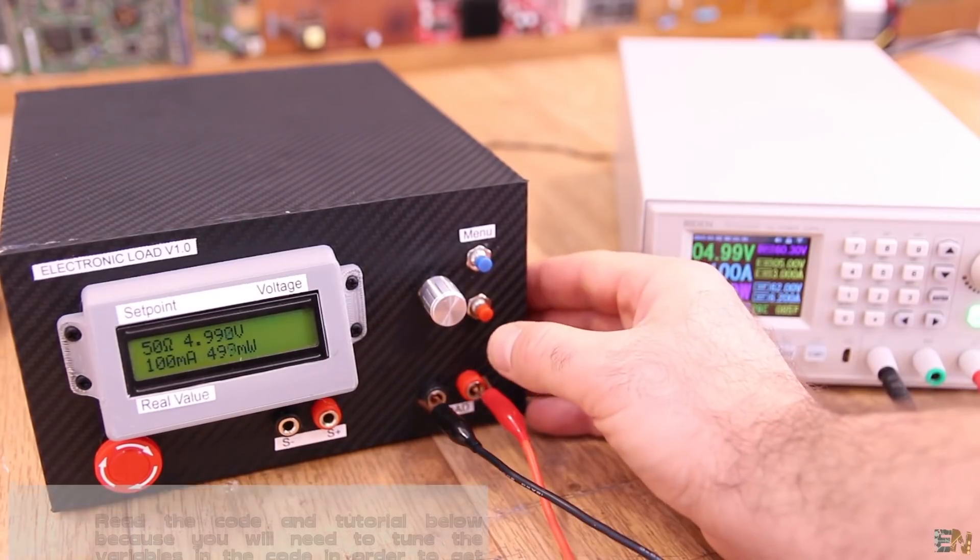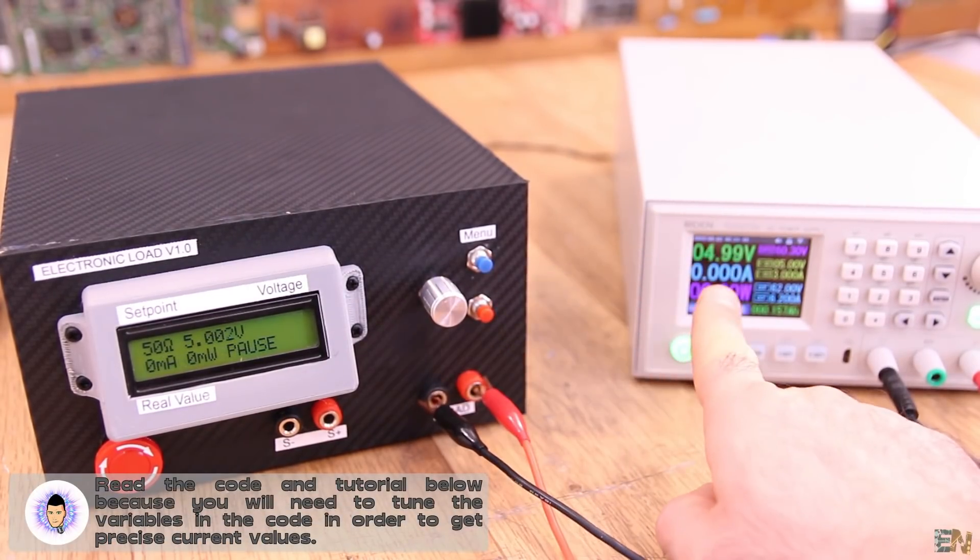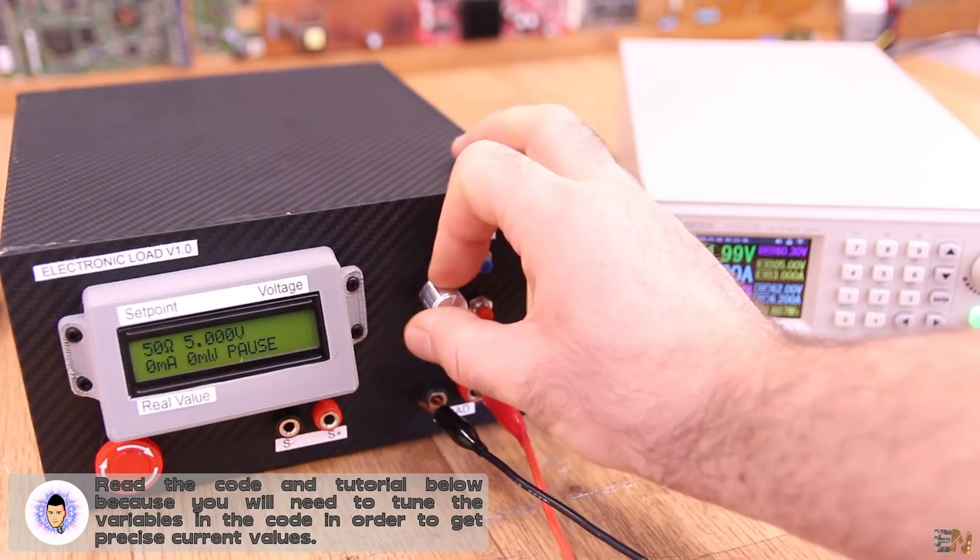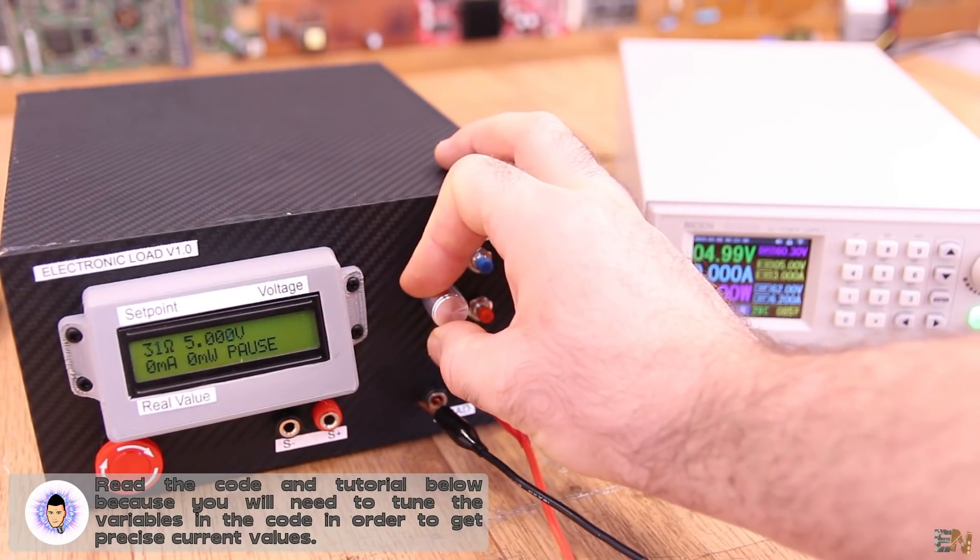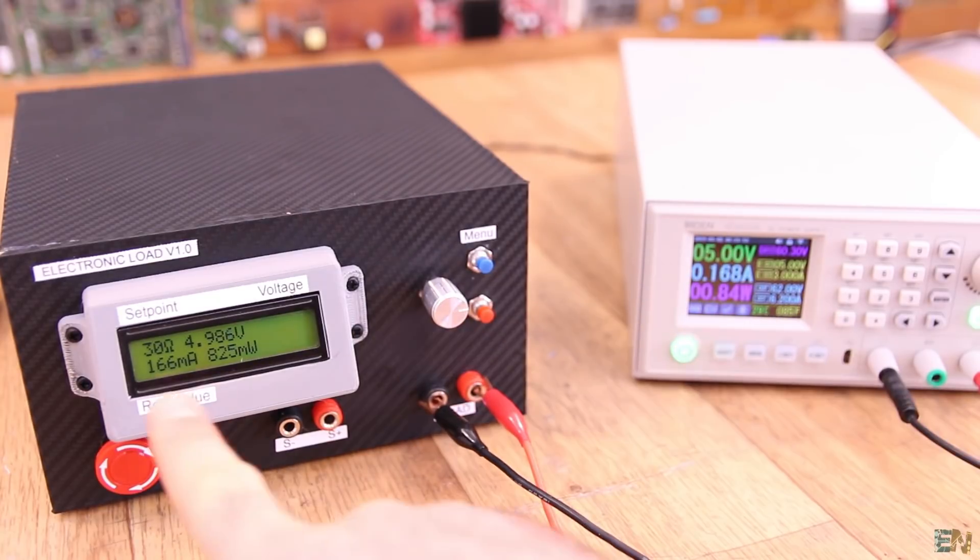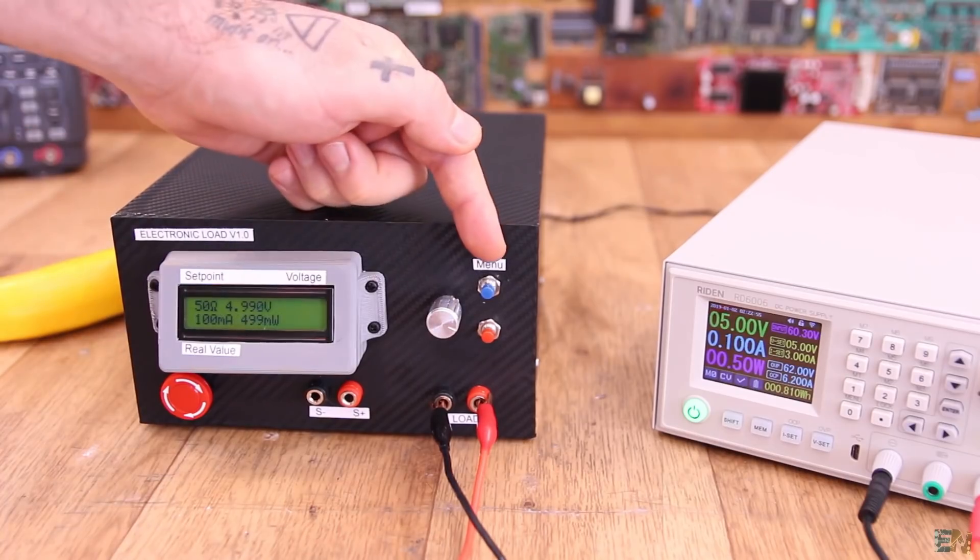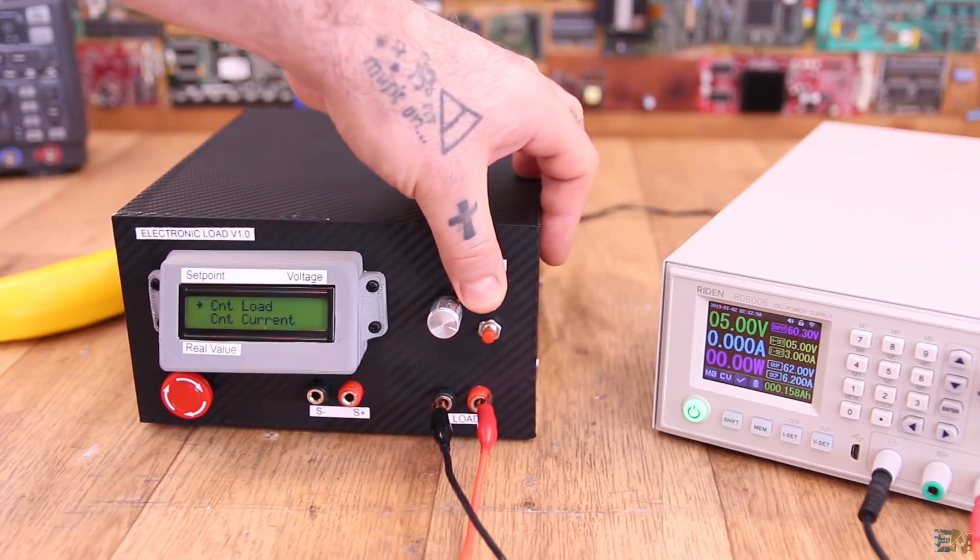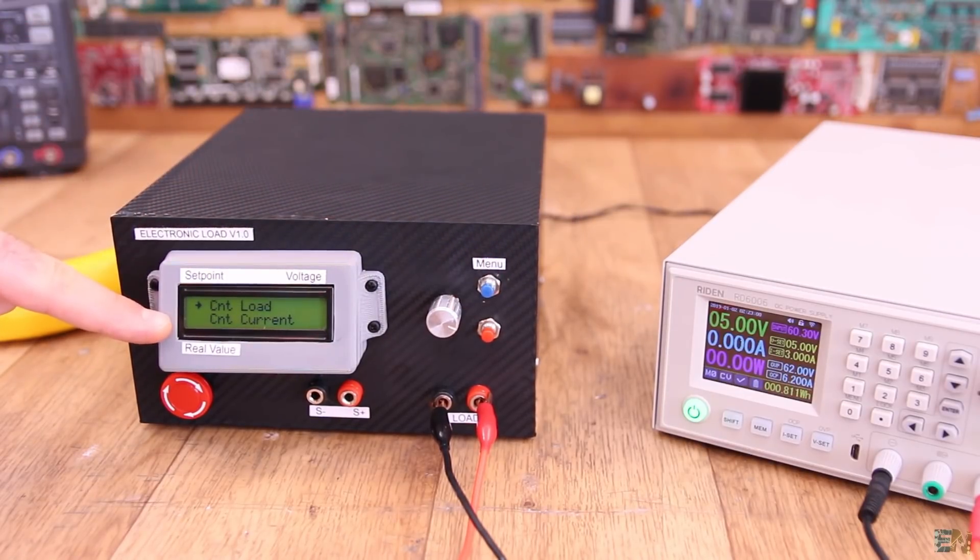By pressing the red button, we can enable or disable the load so everything goes to zero, in case you want to first adjust the set point value and then enable the load. If you press the blue button, we get back to the main menu and the load control stops as well for safety.